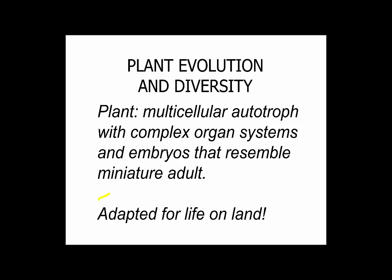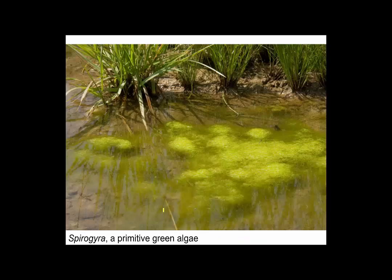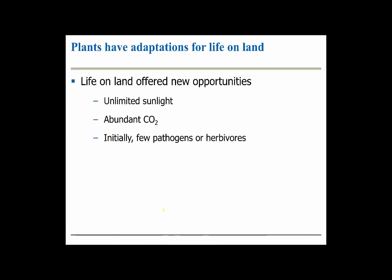Hi-ho, botanists! Let's have a quick review of what we learned so far about the plant kingdom. We learned that plants are multicellular autotrophs with complex organ systems and embryos that, as we will see soon, resemble a miniature adult. Plants are a clade, a group adapted for life on land. Plants are believed to have evolved from aquatic ancestors called algae, which are not quite plants, but they have a lot of features in common with them.